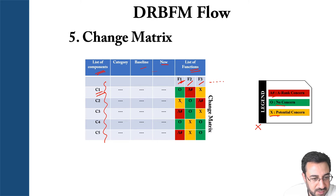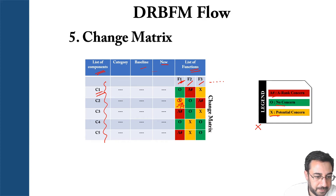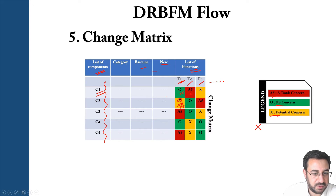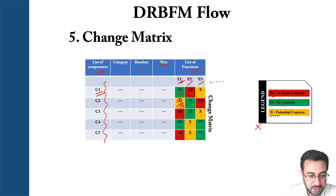You go back to your change matrix and look at potential concerns — is this still a potential concern or no concern at all? If it's no concern, give it a green; if it's an A-rank concern, give it red. Before finalizing your DRBFM sheet, all potential concerns must be resolved to either confirmed concern or no concern.